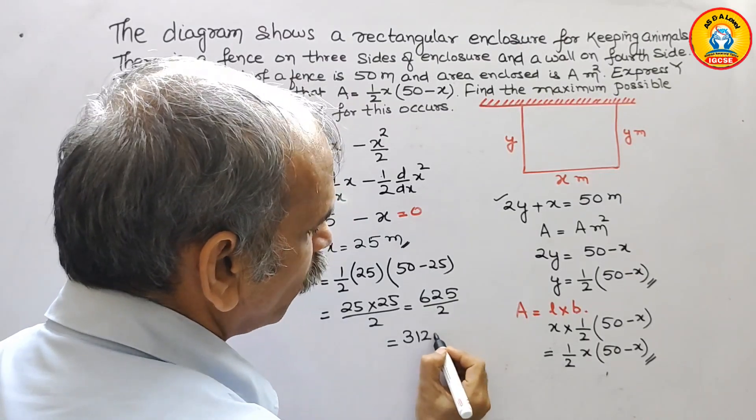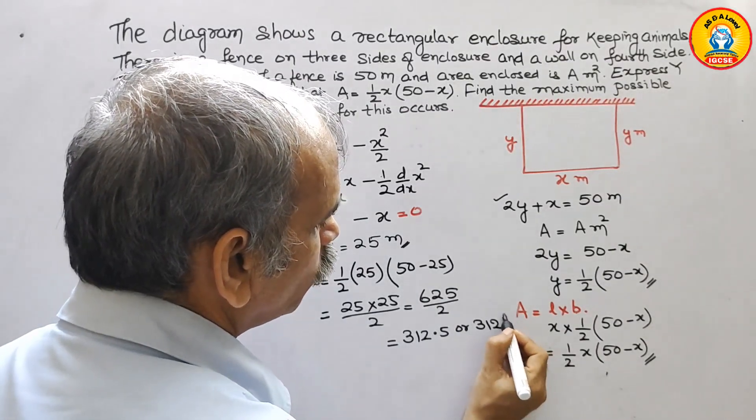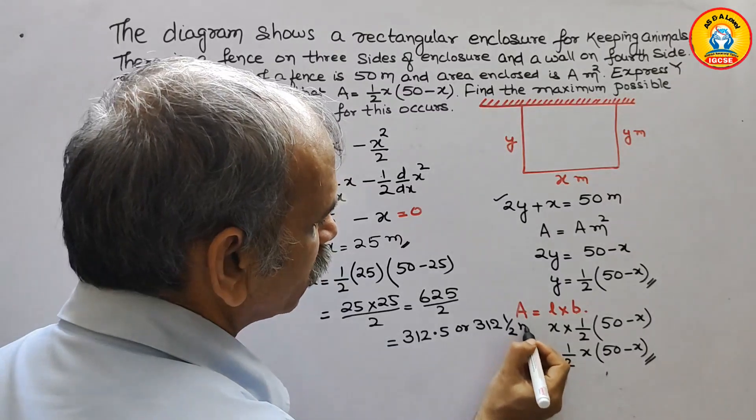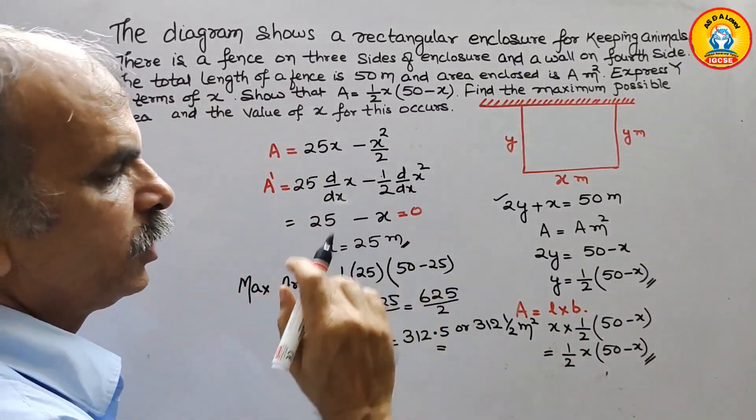312.5, or we can write it as 312 and 1 by 2 meter square. So like this we have to do it.